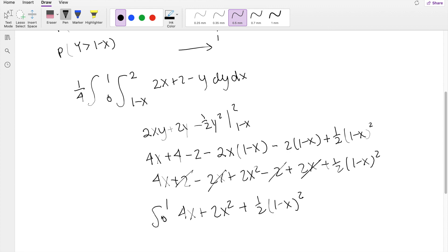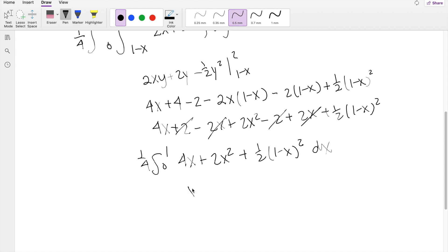Integrating this from 0 to 1, the 1 fourth is still there, dX. Okay, so then this becomes X squared—4 divided by 2, this is 2.